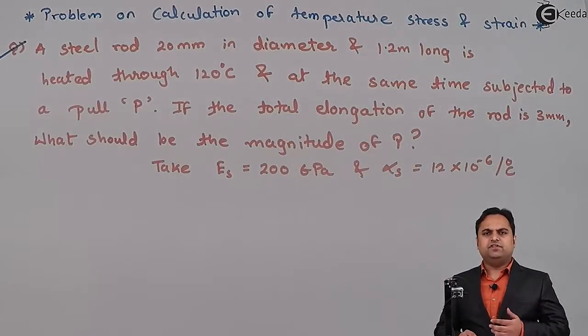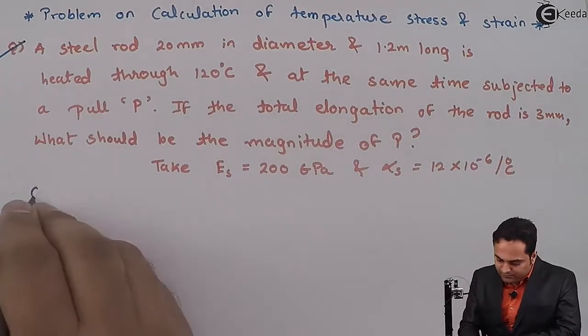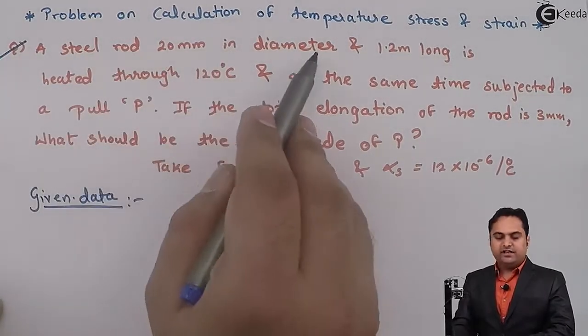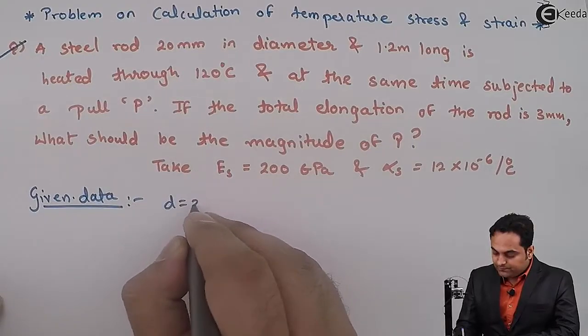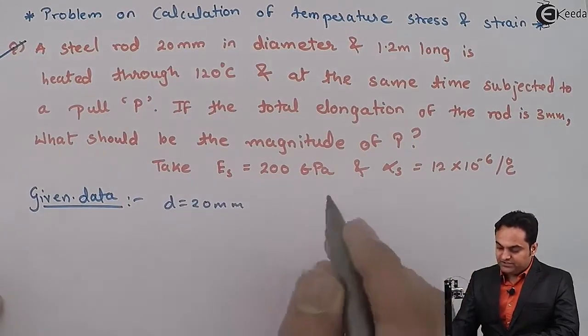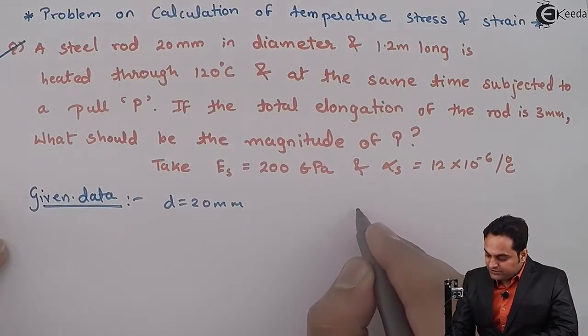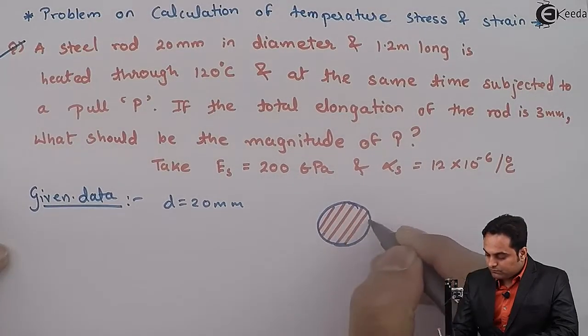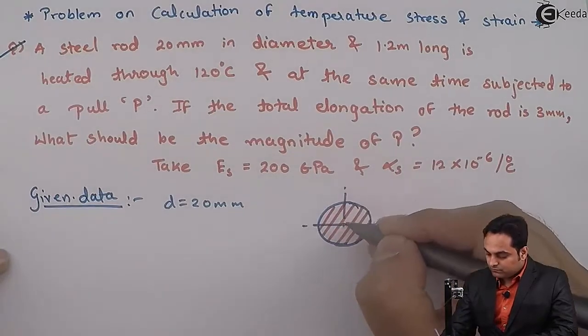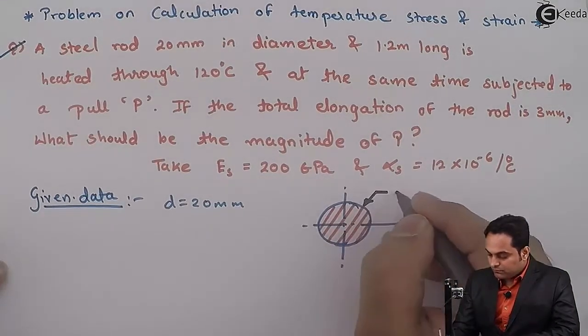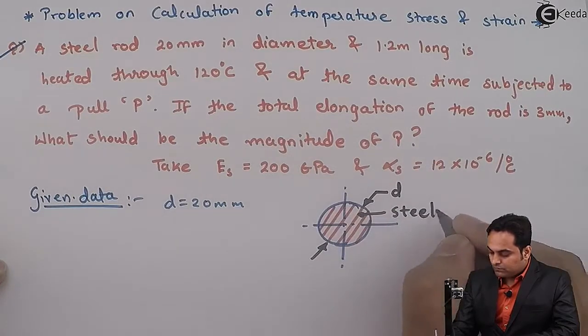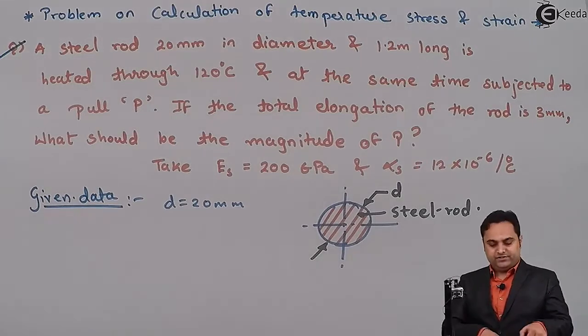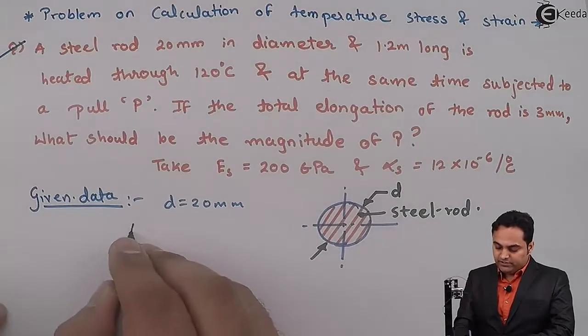Whatever is given in this question first we need to write that in the form of data. Now a steel rod 20 mm in diameter, the diameter is given. Steel rod is there so it is circular in section. So this is the steel rod and as we are seeing that it is circular in cross-section, diameter is given. So we can even calculate area here itself.